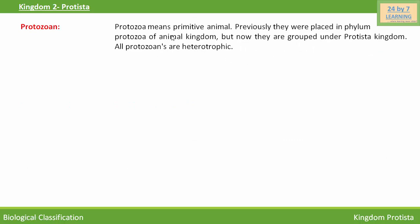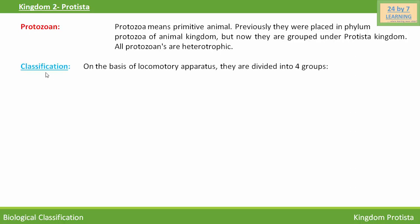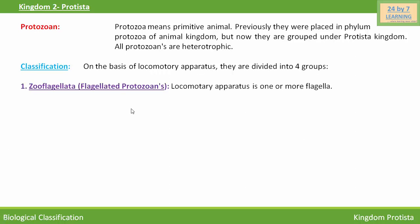Next is protozoan protists. Protozoa means primitive animals. Previously they were placed in phylum Protozoa of the animal kingdom, but now they are grouped under the Protista kingdom. All protozoans are heterotrophic like animals. On the basis of their locomotory apparatus, they are divided into four groups.